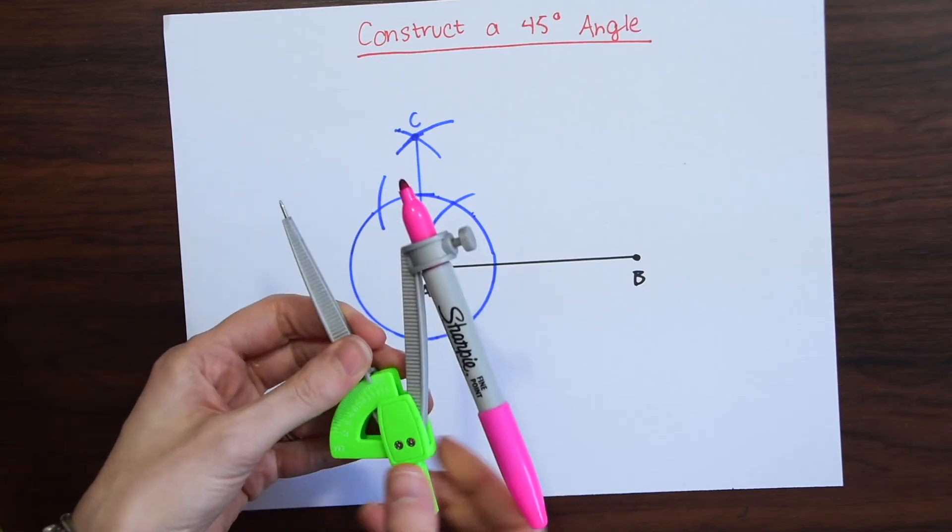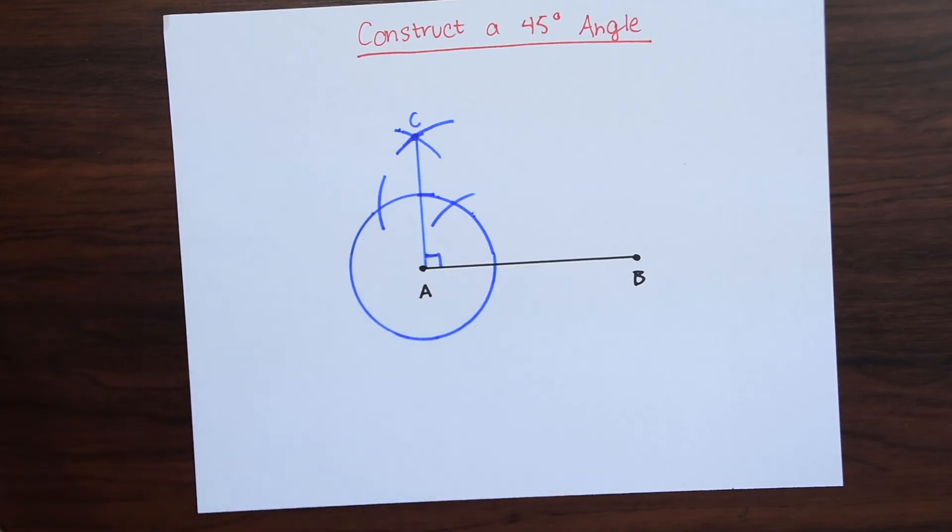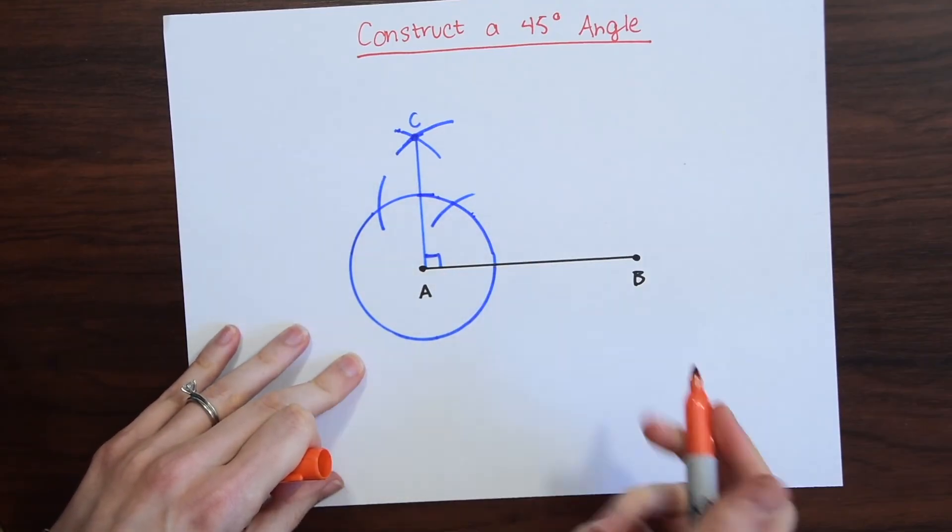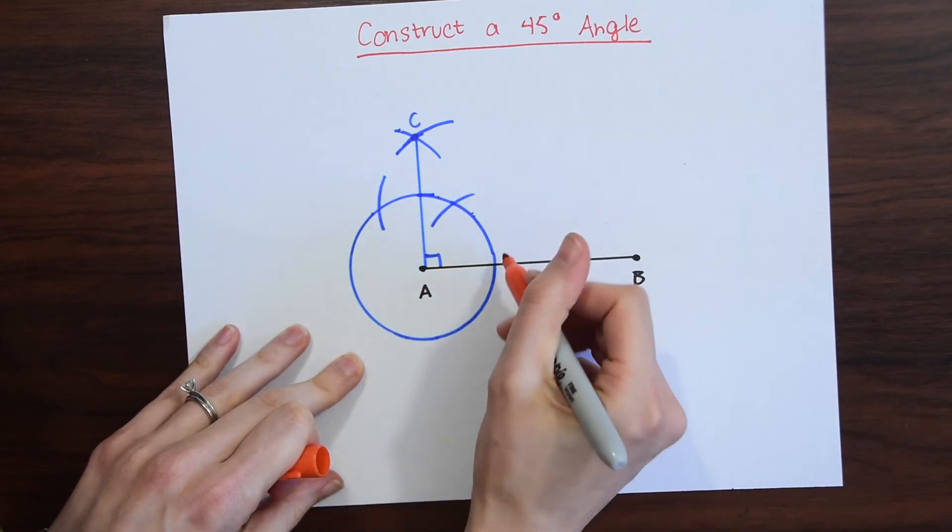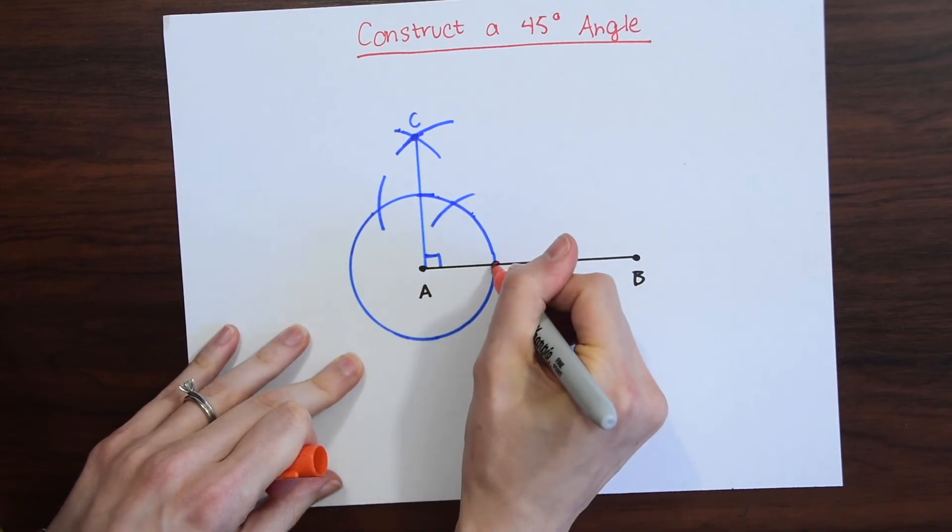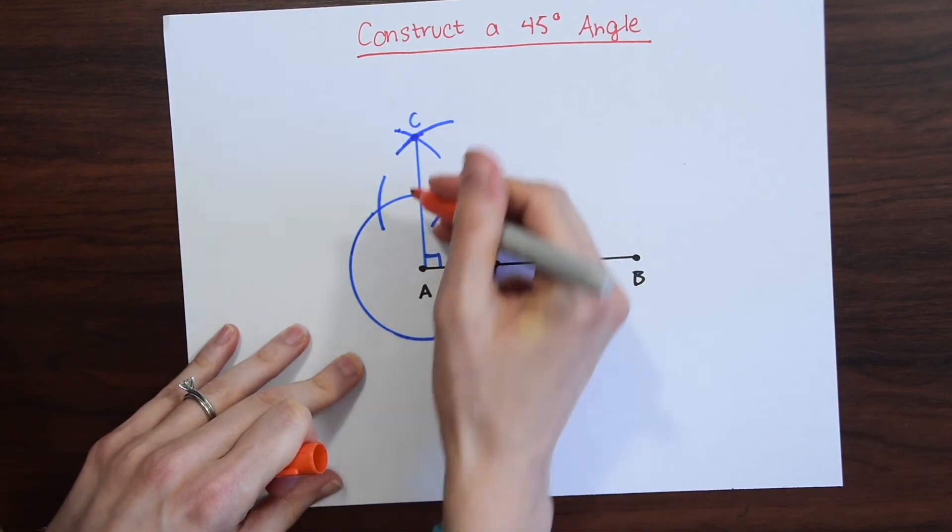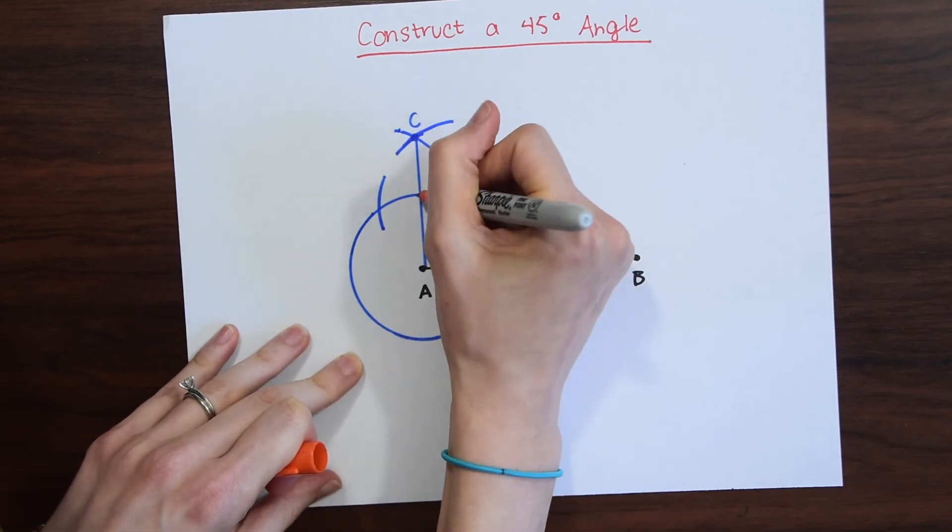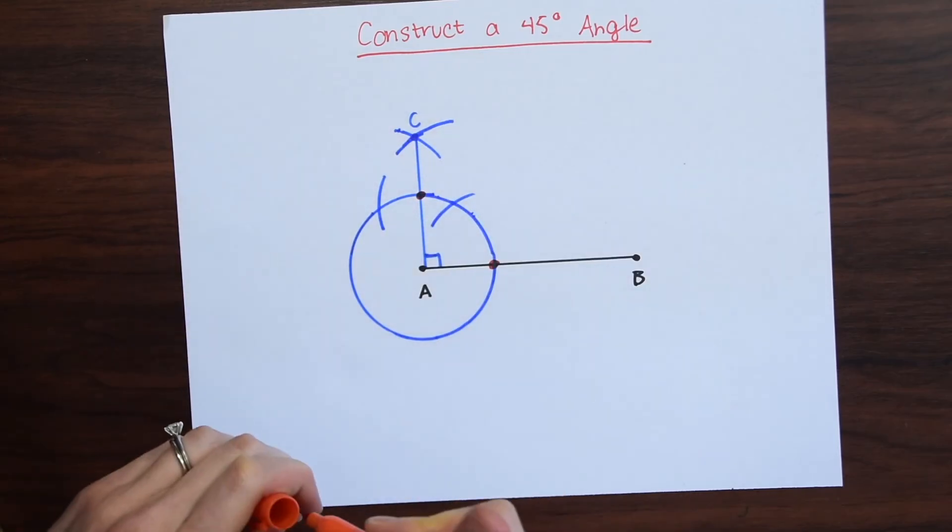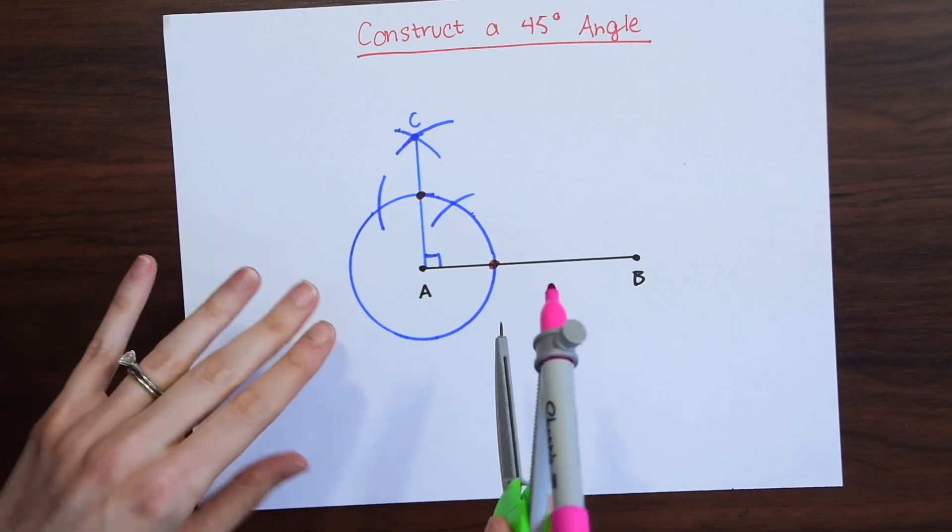We could choose any size this time and we're going to be focusing on the cross sections between the circle and our two lines that make the 90 degree angle. That's where we're going to be putting the points of the compass.